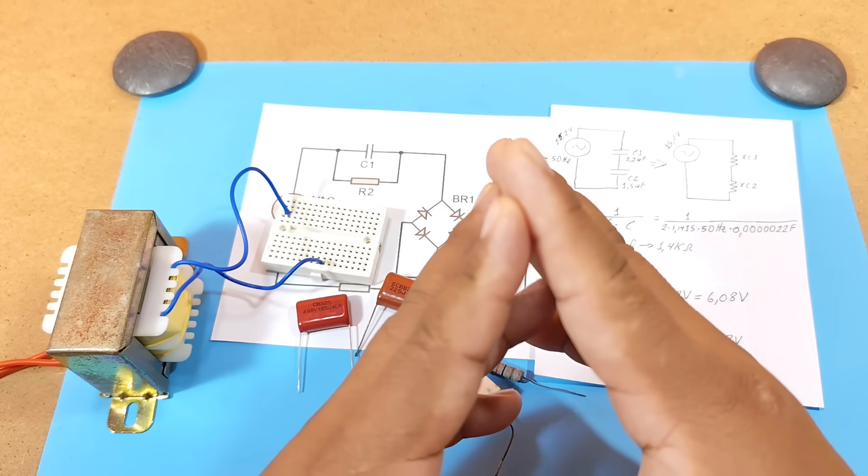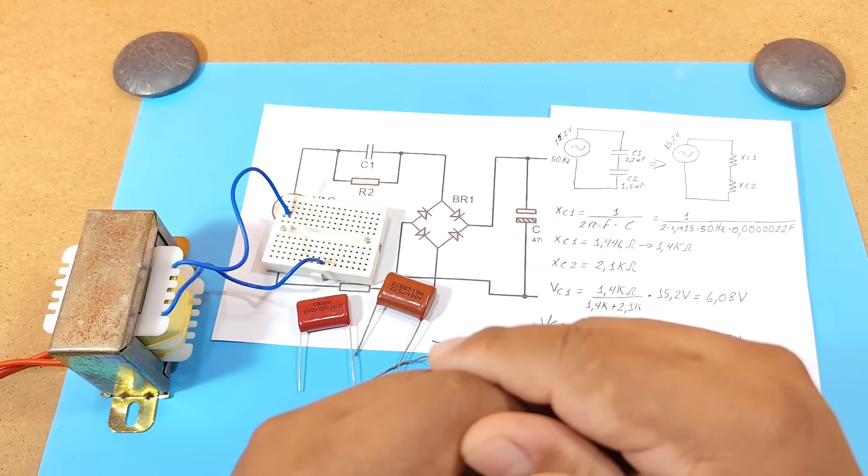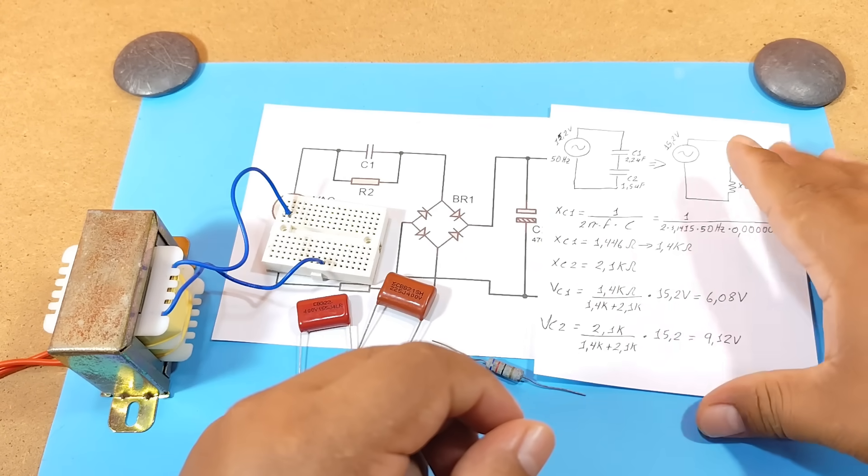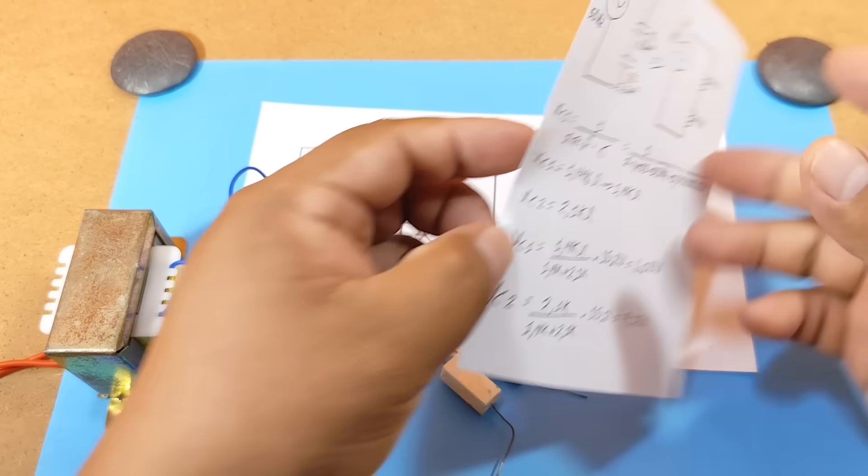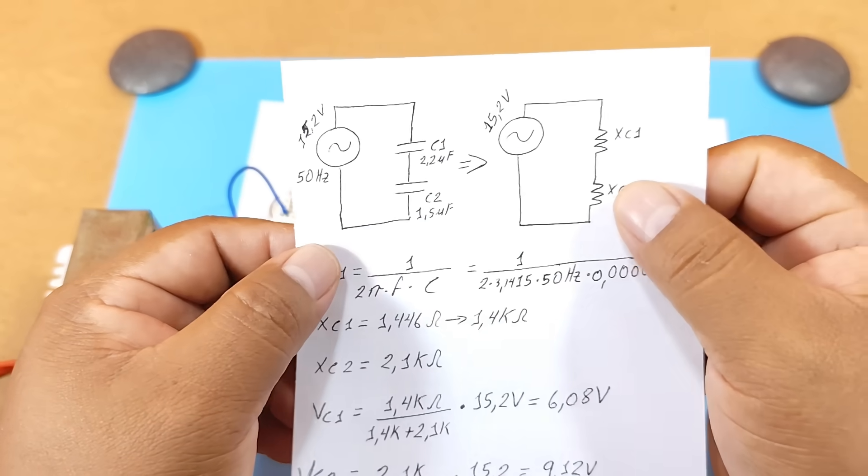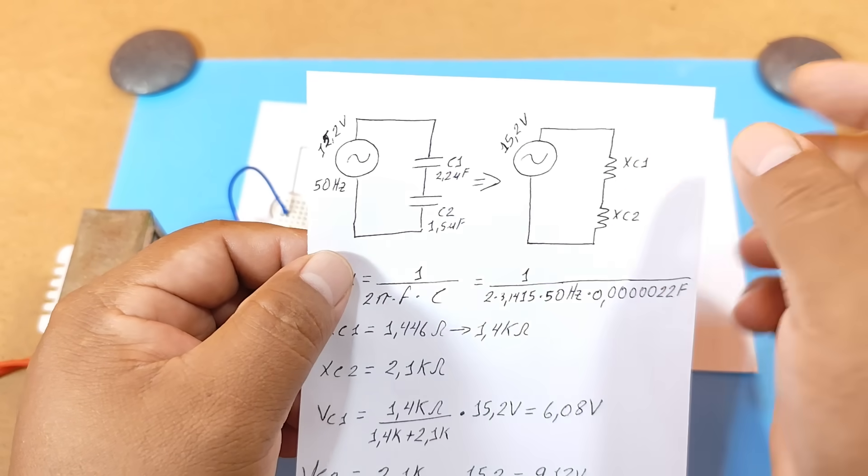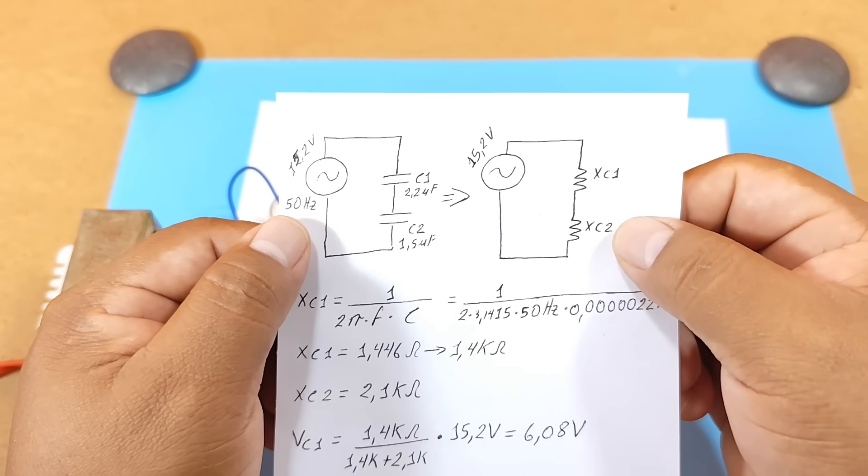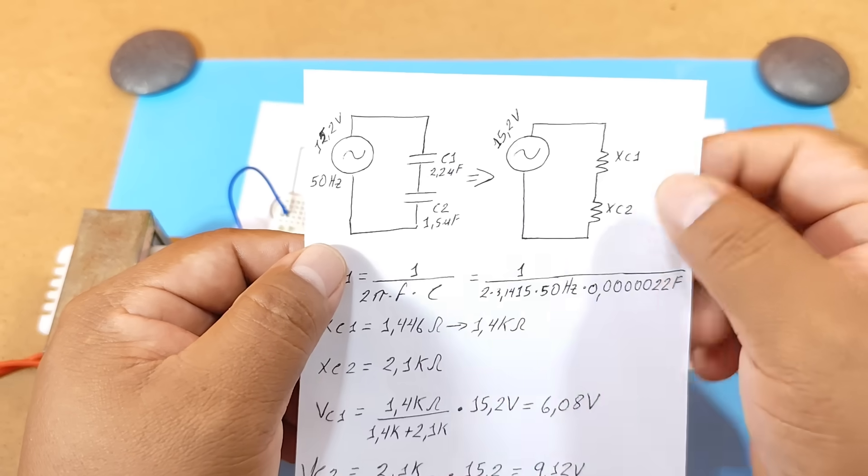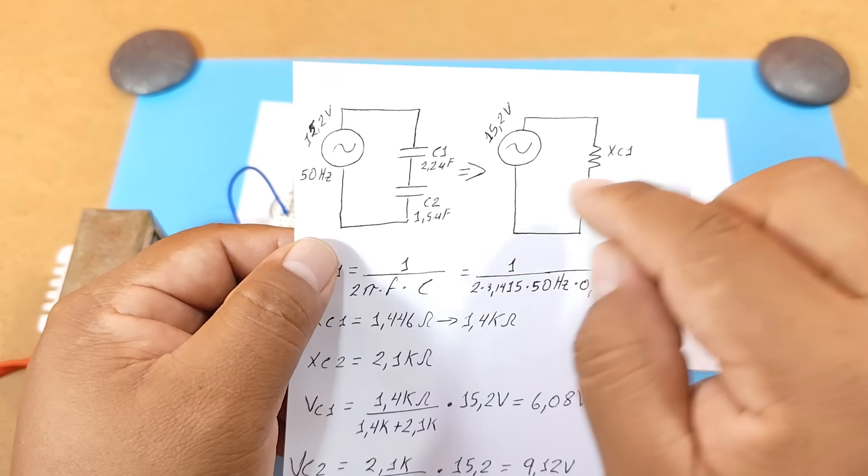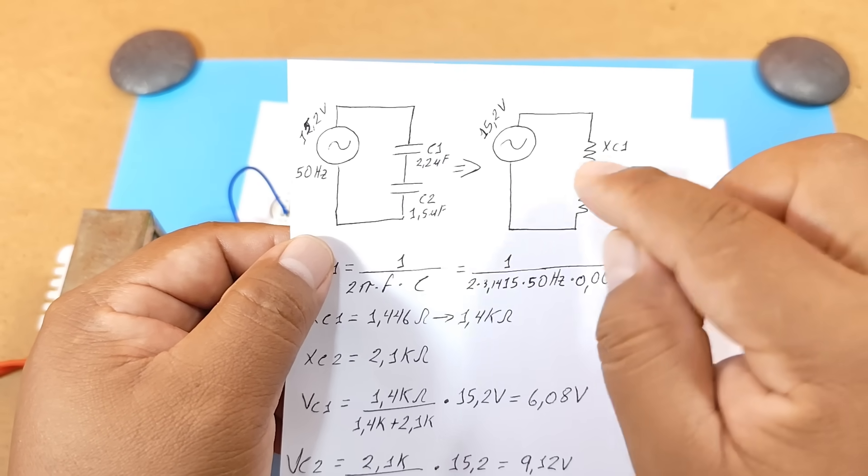Now let's see how much resistance each capacitor offers by building this circuit. Here we have a series circuit to which we will apply approximately 15 volts of alternating current at 50 hertz. Therefore, this circuit would be equivalent to a circuit with two resistors in series.